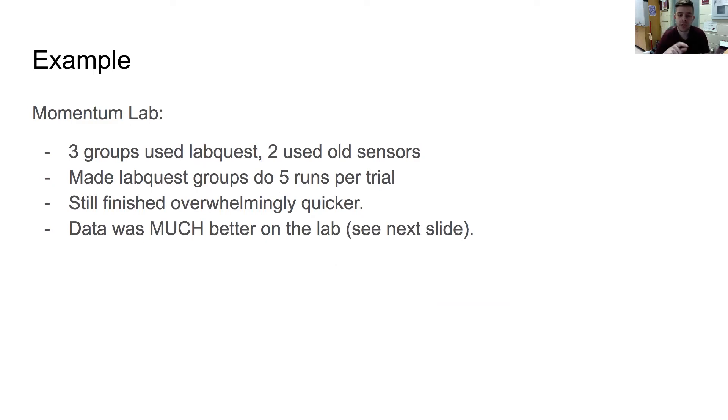I made the LabQuest groups run five runs per trial instead of three runs per trial, because it was easier for them to collect the data. So they actually did quite a bit more than the actual old sensor groups. And they still finished overwhelmingly quicker. And not just that they finished quicker, but their data was much better.